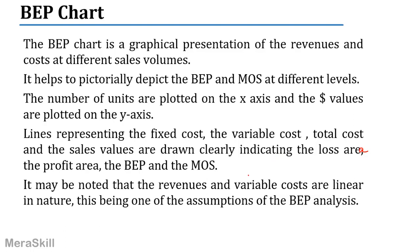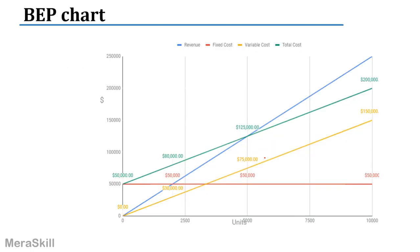The variable cost per unit is fixed — it does not fall due to economies of scale of production. It is as if it is a straight line. Fixed cost is supposed to remain fixed throughout, so all these lines are actually straight lines.